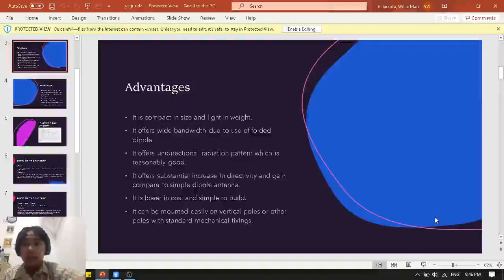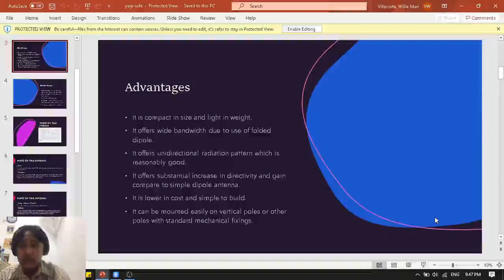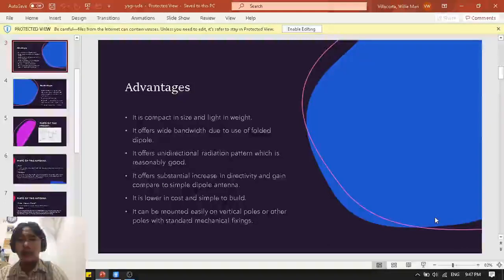The frequency that we are targeting is around 211 MHz so that it makes the frequency is within the range of the said type of antenna. Next, it offers unidirectional radiation pattern which is reasonably good. The design of the folded dipole in our Yagi-Uda produces unidirectional because of its design that produces half-wave dipole that also produces omnidirectional pattern.